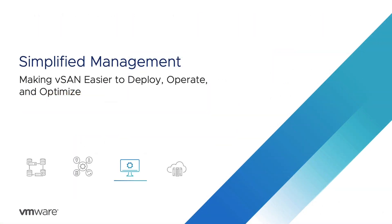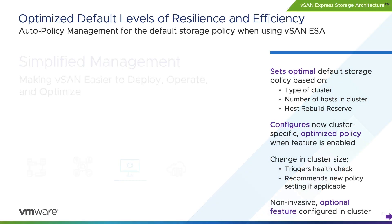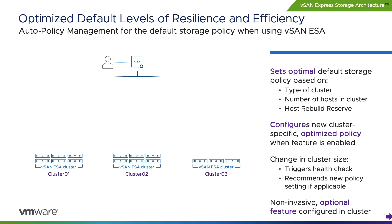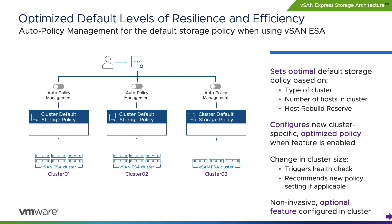Performance, resilience, and flexibility mean less if a solution is not easy to operate. vSAN 8 Update 1 offers several new improvements that simplify day-to-day operations for administrators, as well as introducing enhancements to help VMware's global support team resolve customer issues more quickly. With the express storage architecture in vSAN 8 Update 1, we're introducing a new optional cluster-specific default storage policy that will help administrators run their ESA clusters with the optimal level of resilience and efficiency.